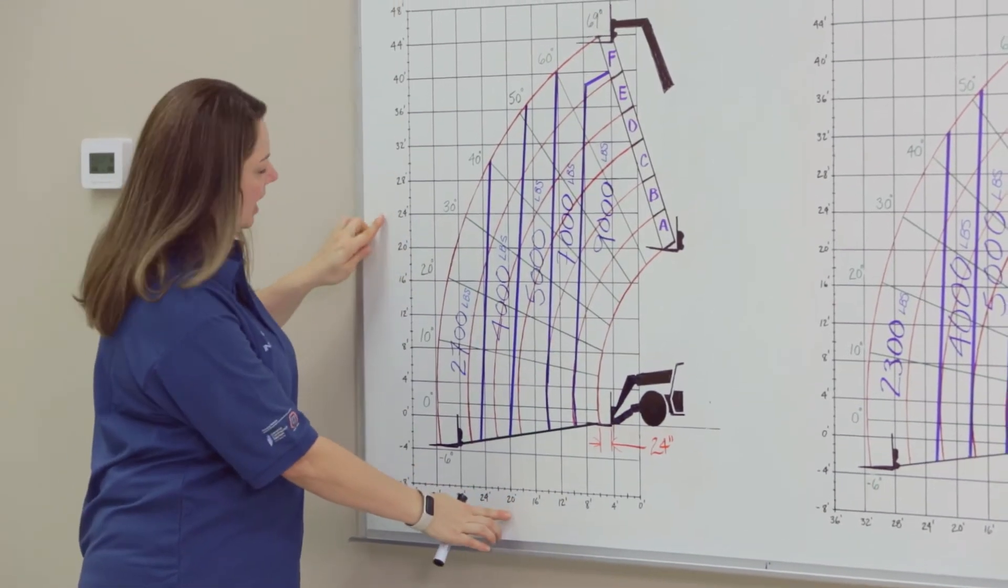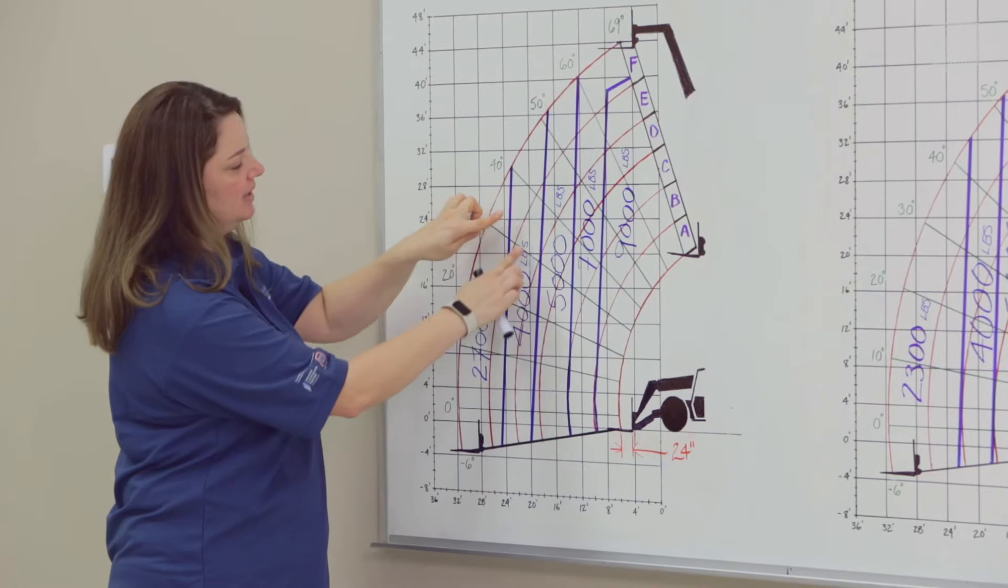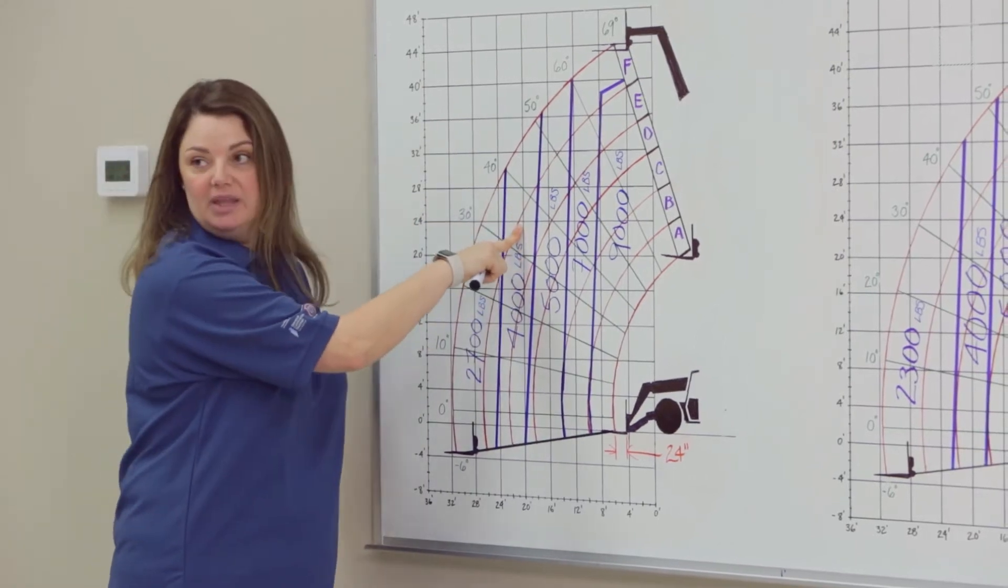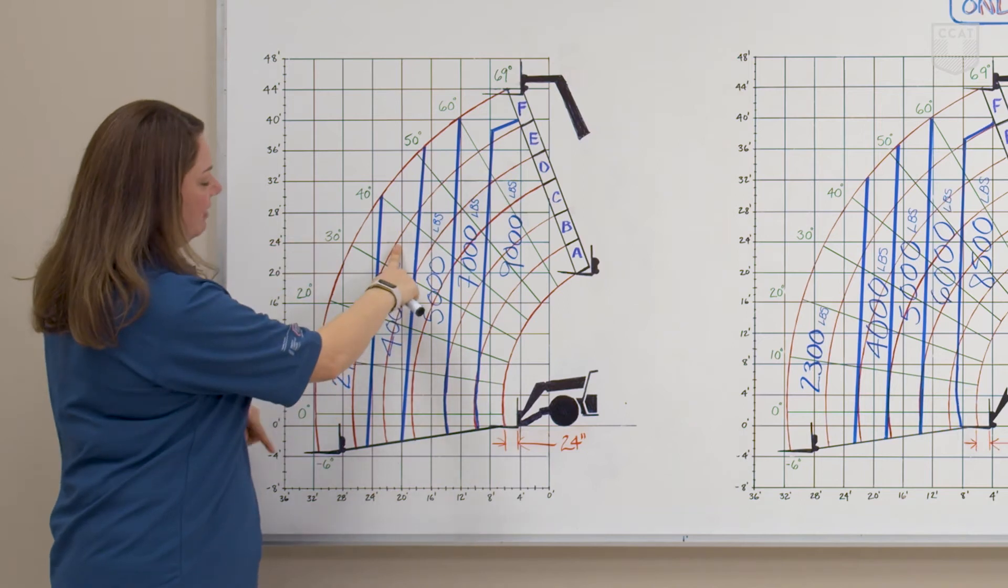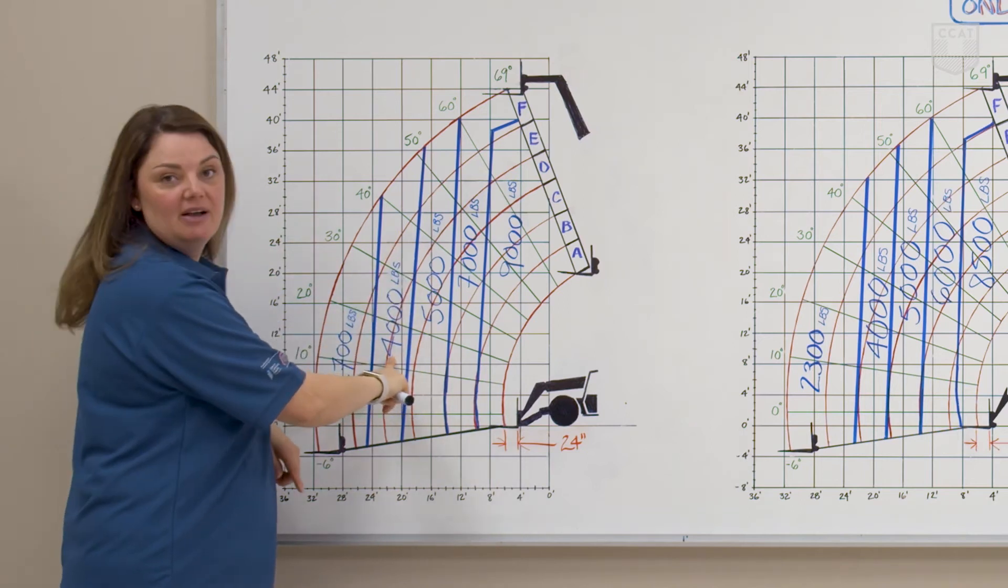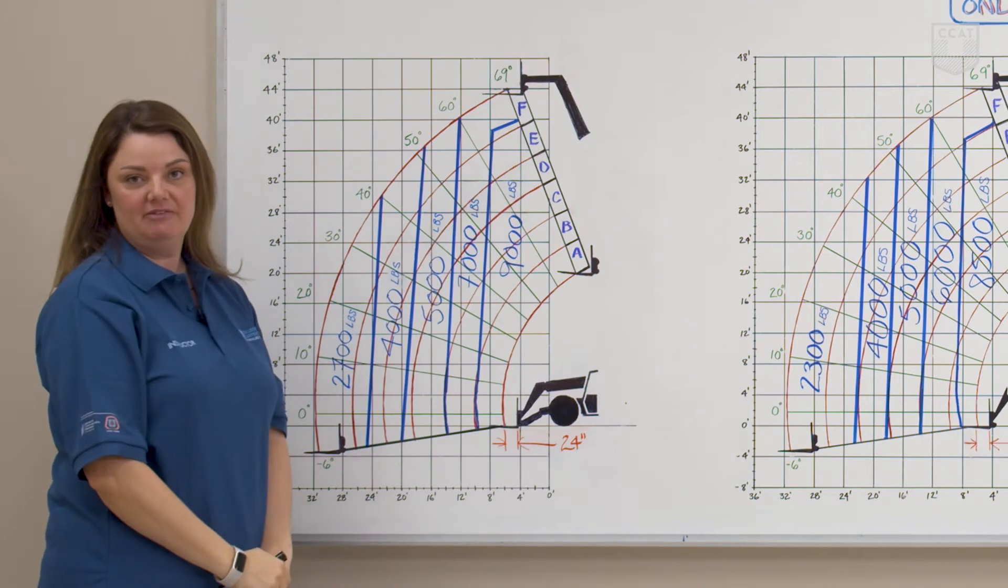So all we're going to be doing is going across both of those measurements to see that we fall within a safe working load. You'll see that in that safe working load, we can lift up to 4,000 pounds, well within the capacity to do this lift.